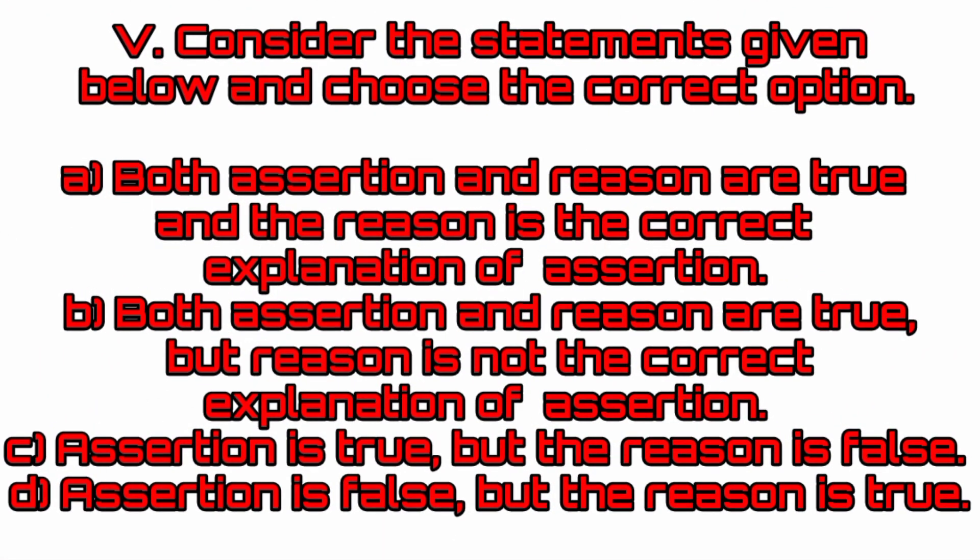Consider the statements given below and choose the correct option. Options: A — both assertion and reason are true and reason is the correct explanation of assertion; B — both assertion and reason are true but reason is not the correct explanation; C — assertion is true but reason is false; D — assertion is false but reason is true.